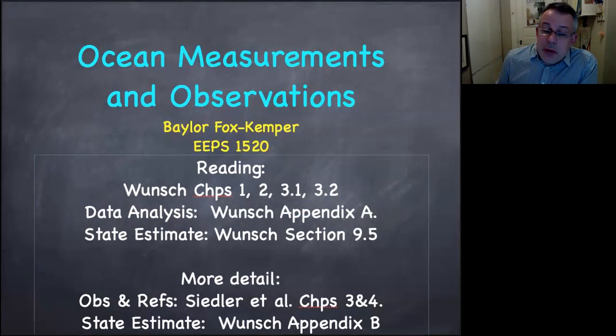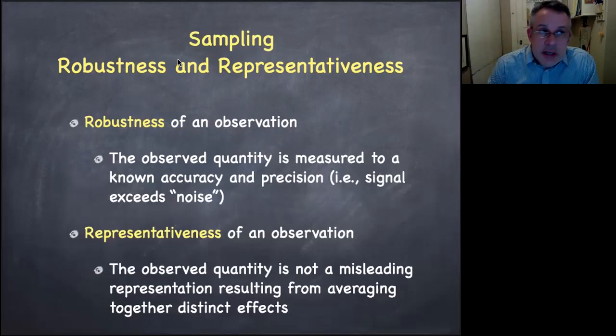So we've got this huge ocean, it's vast, it's diverse. We're interested in robust and representative observations. So the robustness comes from when the observed quantity is measured with a known accuracy and precision. That is, the signal might exceed the noise. And what noise is, is really up to us to define and what signal is, is up to us to define. But we are talking about making measurements of some signal that exceeds the noise, and therefore we can get an accuracy and a precision associated with that set of measurements.